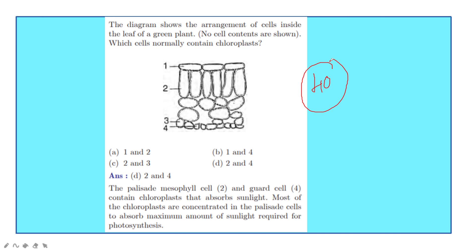This is the 40th question. A leaf diagram shows the arrangement of cells inside the leaf of a green plant. The question asks which cell normally contains chloroplasts.